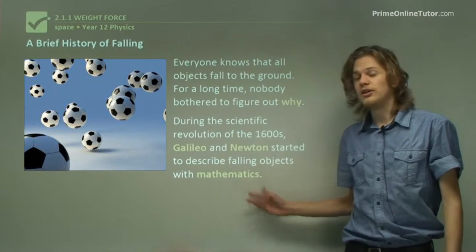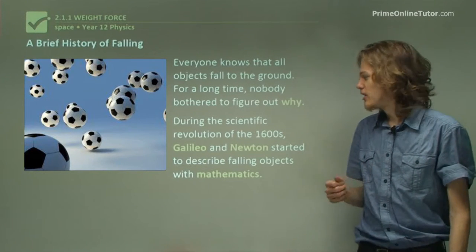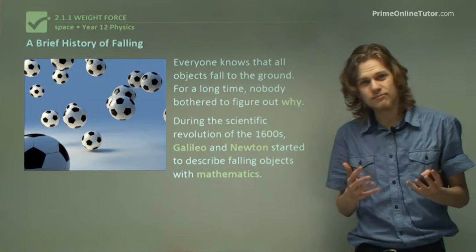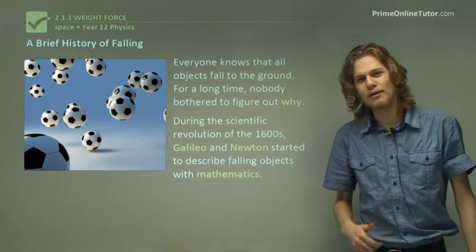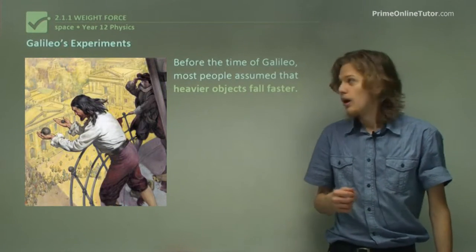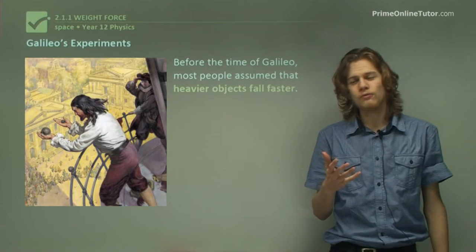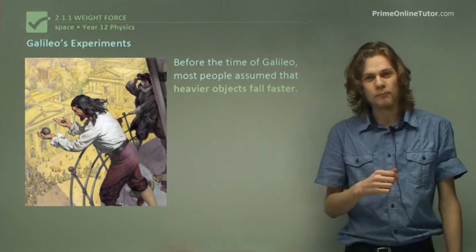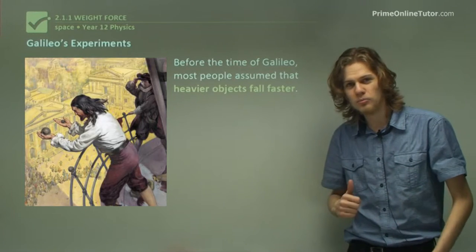It wasn't until the 1600s when Galileo and Newton, two famous scientists, tried to describe the motion of falling objects using mathematics. This was part of the scientific revolution of the time. So before the time of Galileo, most people assumed that heavier objects fall faster. A lot of the ideas of science were influenced by Aristotle and this is how he believed objects fell. He certainly knew that if you dropped a heavier object it would land harder than a light object.